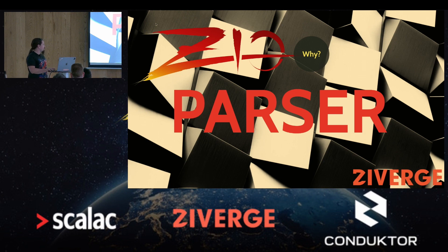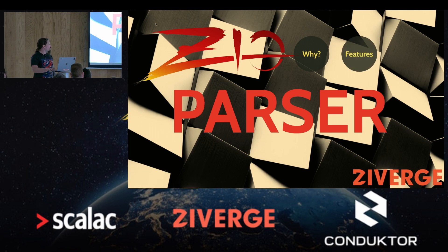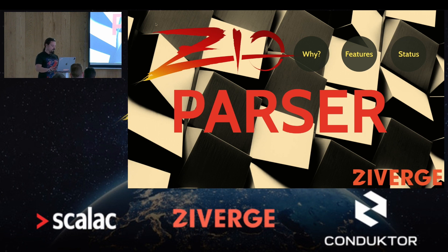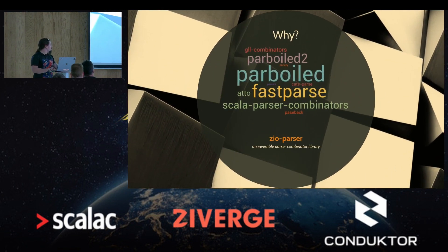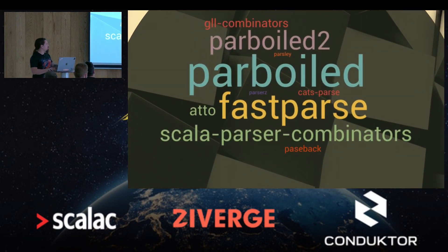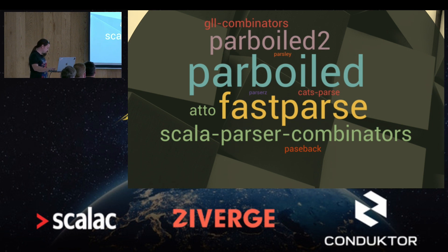First, just a few words about why create a new parser library — why create one more — then I will talk a little bit about the features, how it feels, and finally a few words about its current status: is it usable or not, or what's left to be done. So why create one more when the Scala ecosystem already contains tens or twenty different parser libraries?